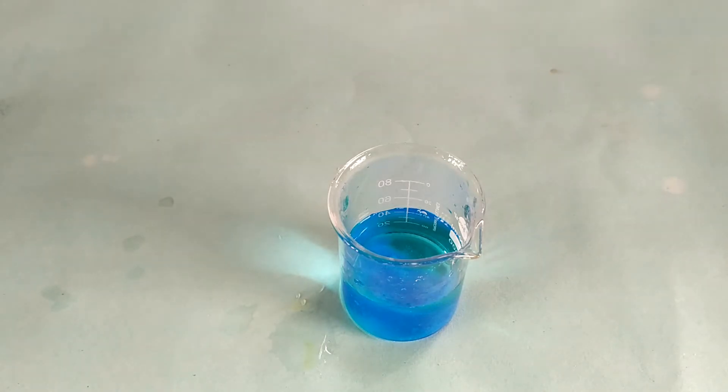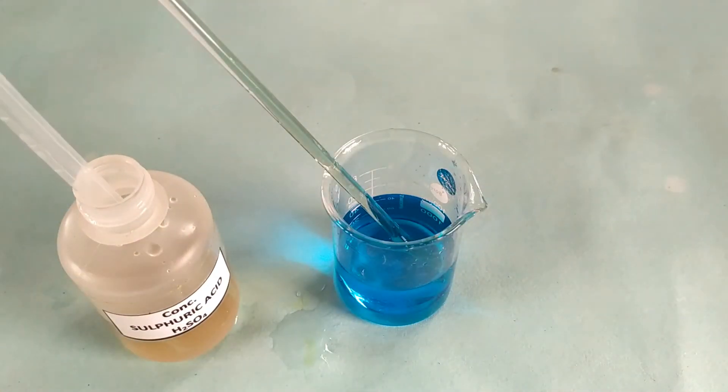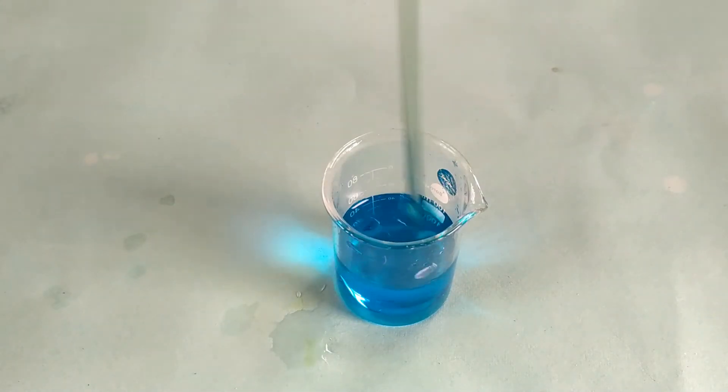Add about 40 ml of distilled water into the beaker and stir the contents. Add about 2-3 drops of concentrated sulfuric acid and continue stirring until the copper sulfate has dissolved completely.